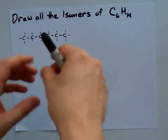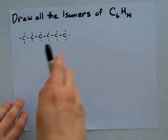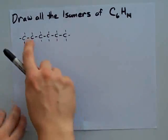We need to break the chain and reattach in some way that still has six carbons.